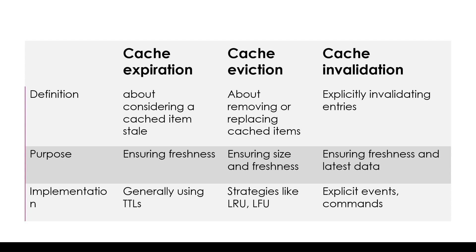Cache eviction is the process of removing or replacing items from the cache. In the case of cache invalidation, the cached entries are marked invalid explicitly, which may trigger a refresh or refetch of the original data from the original source. The important thing to note in cache invalidation is that the entries are marked explicitly and proactively.